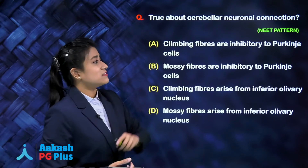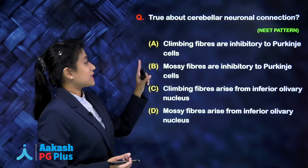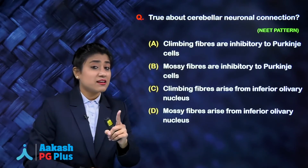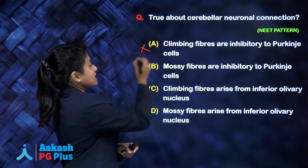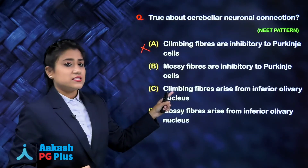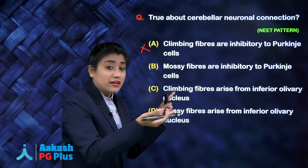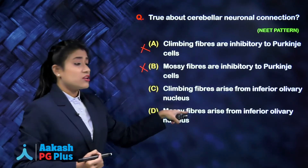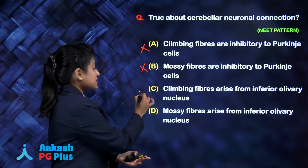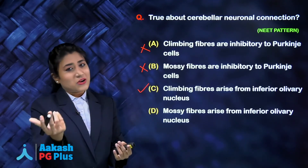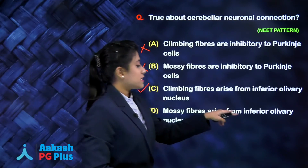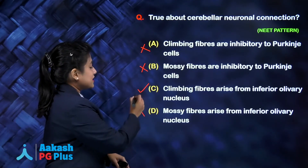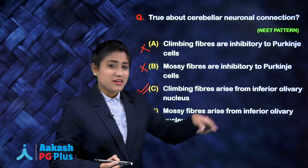Question: what is true about cerebellar neuronal connections? Option A: climbing fibers are inhibitory to Purkinje cells — no, climbing fibers are excitatory. Option B: mossy fibers are inhibitory to Purkinje cells — no, mossy fibers end on granule cells. Option C: climbing fibers arise from inferior olivary nucleus — yes, this is true and is the correct answer. Option D: mossy fibers arise from inferior olivary nucleus — no, that's wrong.